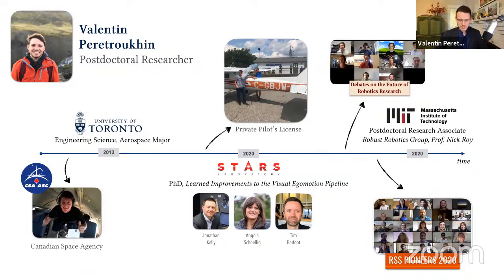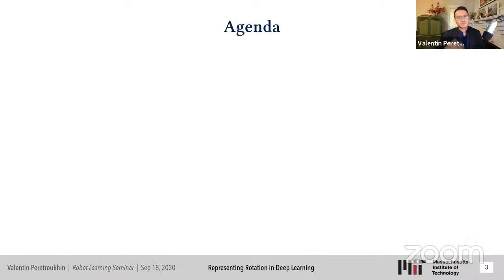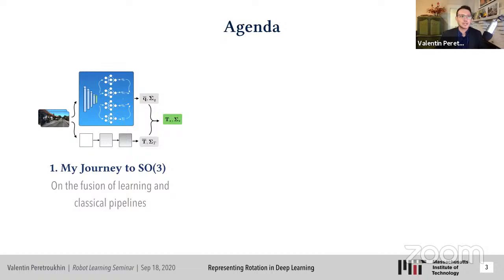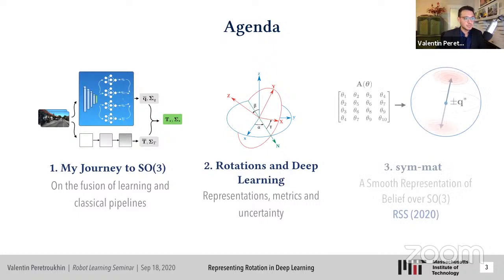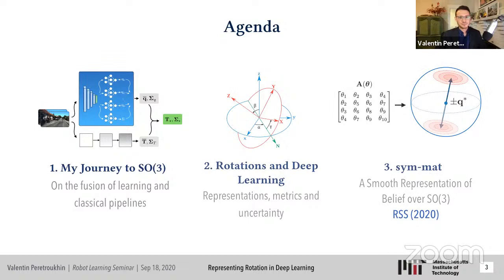The agenda for this afternoon includes three parts. First, I'll tell you how I came to care about learning rotations through my doctoral work. Then I'll discuss some nitty-gritty details about rotations and what's important to keep in mind when incorporating them into deep networks. Finally, I'll cover specifics about the recent paper published at RSS 2020 on a new representation of rotations particularly suited to deep learning.